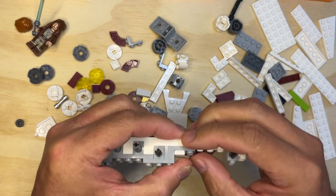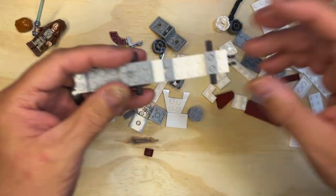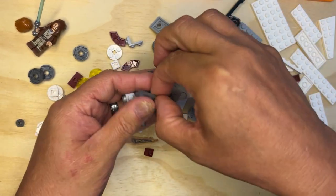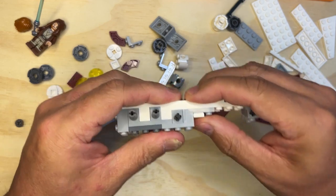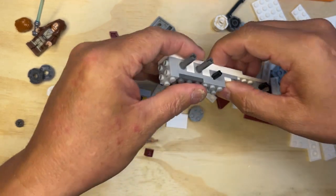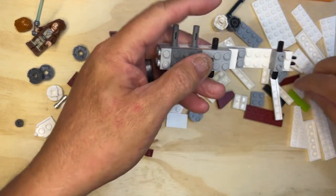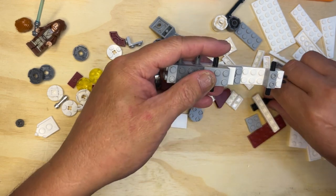And I need this dark gray, two by three, to go right there. Let's see where I'm at. Oh yeah, I'm good.